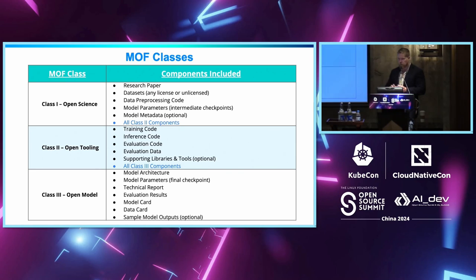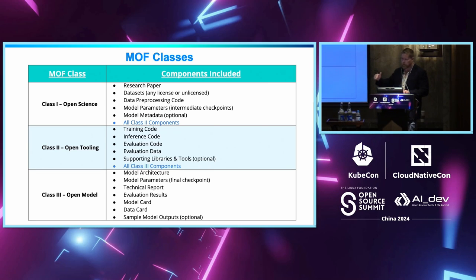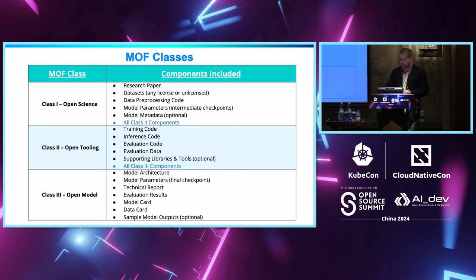And then we have Class 1, open science — this is what we aspire to. Examples include Pythia from Eleuther AI and OLMo from the Allen Institute. This includes the research paper describing the entire development process, behavioral elements, evaluations, and additional items like intermediate model parameter checkpoints, which allow you to go back in the training process and pick up from any given point. This gives transparency in how the model was trained and developed over time.